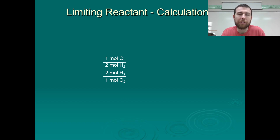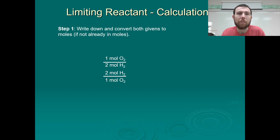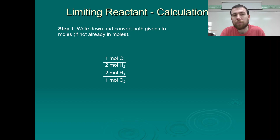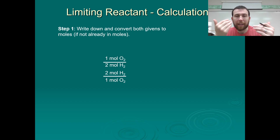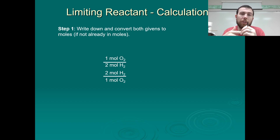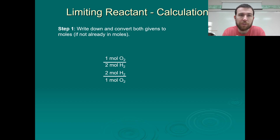Here's a process you can use. Step one: write down and convert both of your givens to moles if they're not already in moles. Moles allow us to communicate very clearly and concisely in terms of chemical quantity, so moles is always a good unit to get into so we can figure out where to go from there.